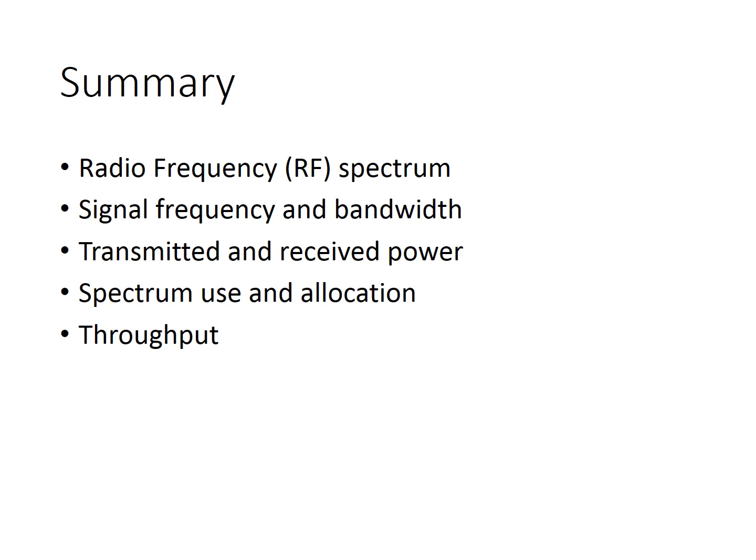While we viewed an equation that shows this relationship for free space conditions, many other mathematical models and computational techniques are used to predict received power in non-free space radio channels. In addition, we saw how the finite and valuable RF spectrum is allocated, and mentioned that with growing demand, it may be necessary to find more efficient ways to allocate and use the spectrum. Finally, we considered throughput, a measure of a communication link's effective data rate that is expressed in bits per second, or BPS.